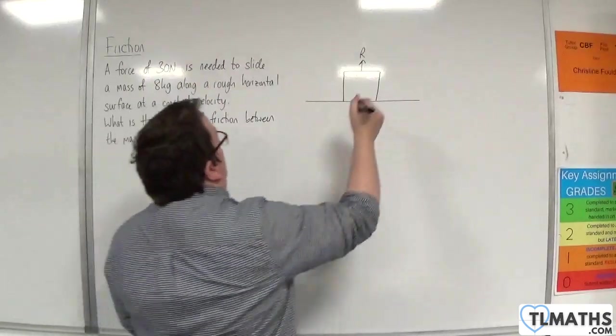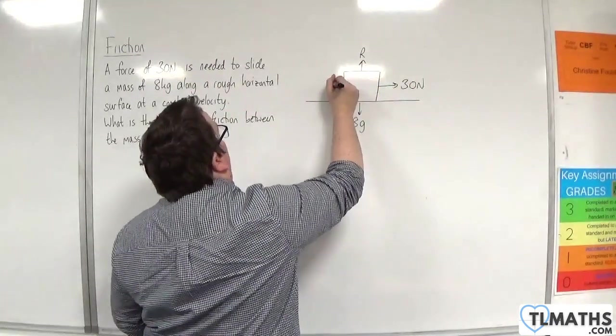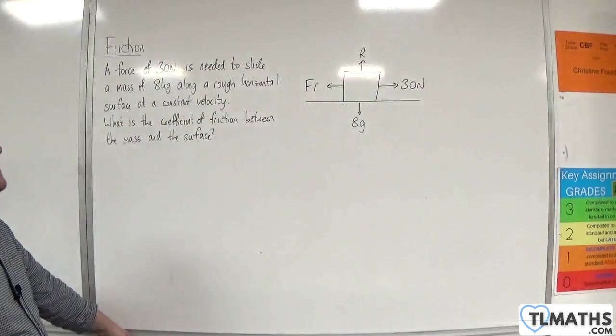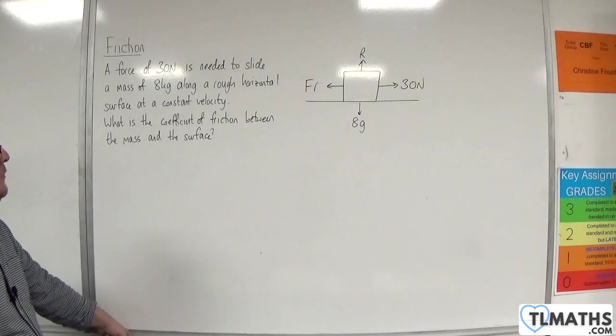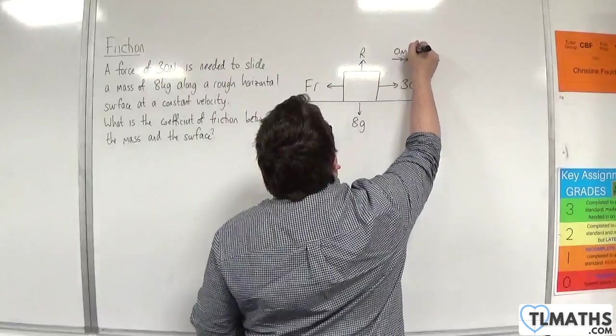Now, a force of 30 newtons. We've got 30 newtons acting to the right, so we'll have the frictional force working to the left. And it's going along with a constant velocity, which means that the acceleration is 0.